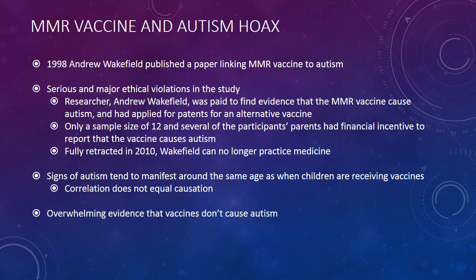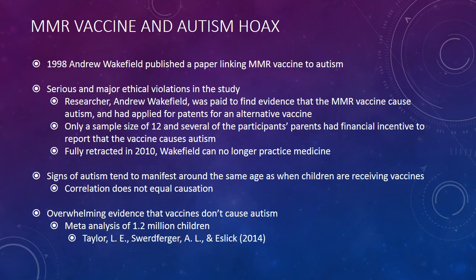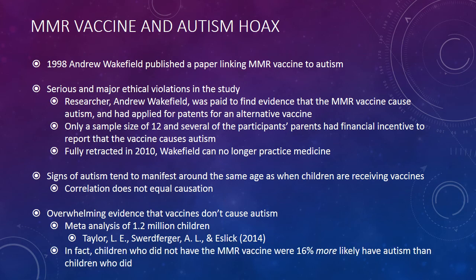There is overwhelming evidence that vaccines don't cause autism. There was a meta-analysis of 1.2 million children by Taylor, Swerdfeger, and Eslick, and they found that vaccines don't cause autism. In fact, children who did not have the vaccine were 16% more likely to have autism than children who did. So not only do vaccines not cause autism, but children who didn't receive vaccines were even more likely to have autism.